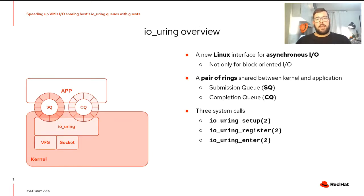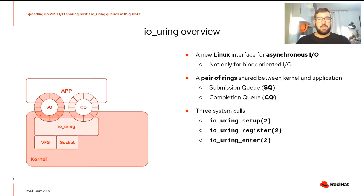IOUring is a new Linux interface between userspace and kernel to do asynchronous I/O. It's not only oriented to block operations, but has evolved into a generic interface to do asynchronous system calls. The interface consists of a pair of rings allocated by the kernel and shared with userspace. One ring, the Submission Queue, is used by the application to submit new requests, and the other ring, the Completion Queue, is used by the kernel to return the result of submitted requests.